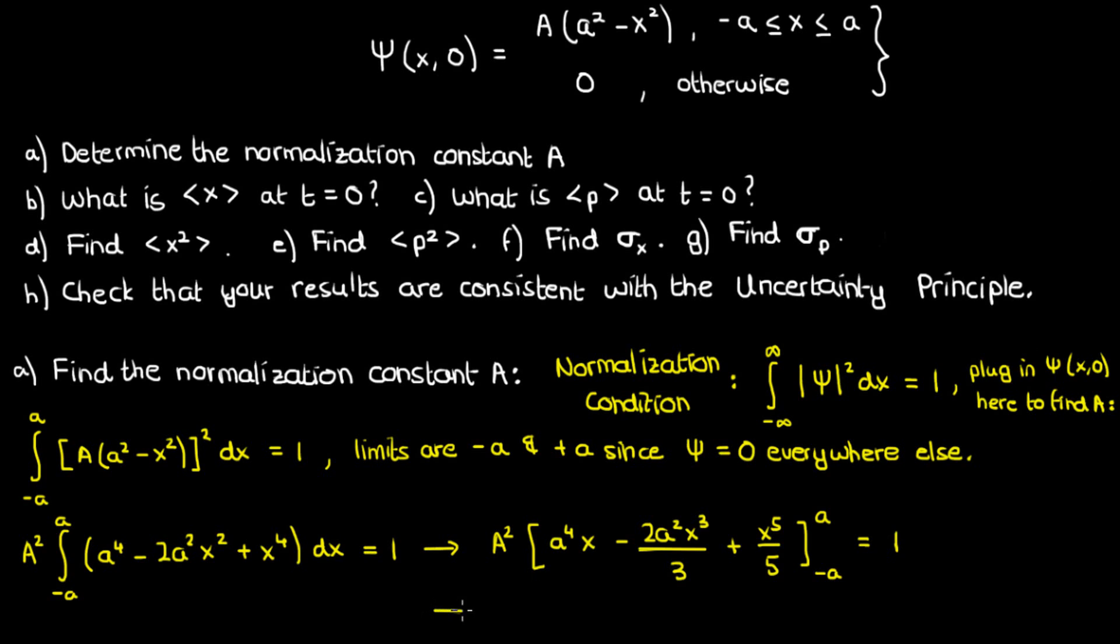Let's now apply the limits. At x=a we'll have a⁵ - 2a⁵/3 + a⁵/5. And at x=-a, because the powers on x are all odd, we'll have the opposite.